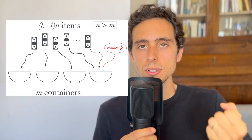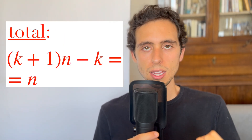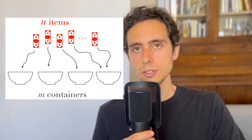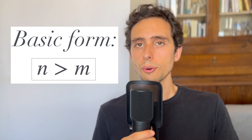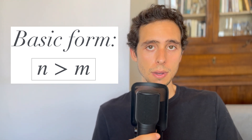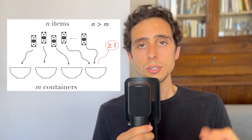Remove the k items from that container. Now we have (k+1)n minus k, which is n items left. We place the remaining n items into the m containers. By the basic form of the pigeonhole principle, since n is greater than m, at least one container must contain more than one item. Therefore, adding back the k items to this container results in at least k+1 items in one container.